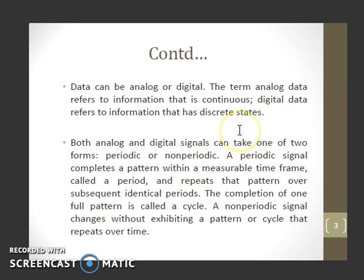Data can be analog or digital. Analog data refers to information that is continuous, while digital data refers to information that has discrete states.